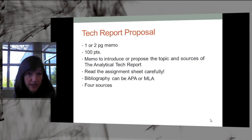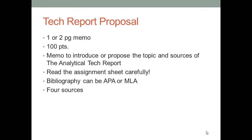For the tech report proposal, which is your first assignment for this module, you're writing a one or two page memo — worth 100 points. It's a memo to introduce or propose your topic and sources to your supervisor, which in this case is me. Please read the assignment sheet carefully. You will need a bibliography with four sources, formatted in either APA or MLA, whichever you're most comfortable with.